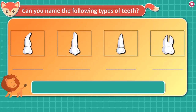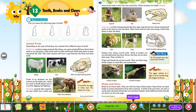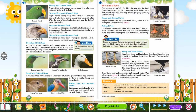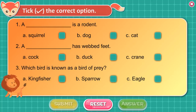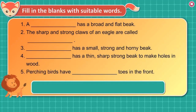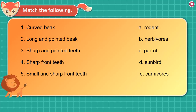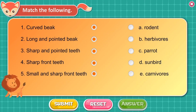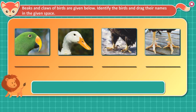Activity: Can you name the following types of teeth? Tick the correct option. Fill in the blanks with suitable words. Match the following. Fun time: identify the birds from their beaks and claws and drag their names.